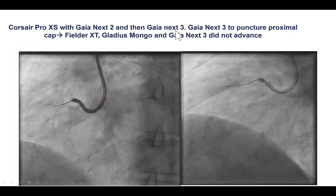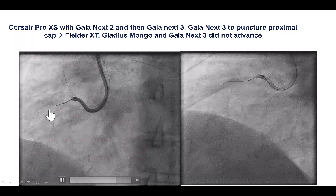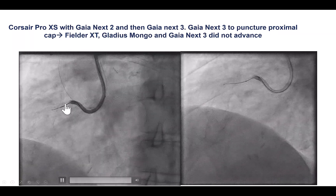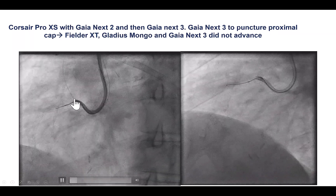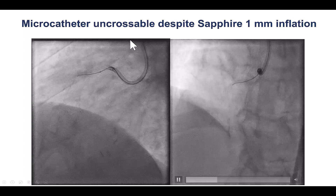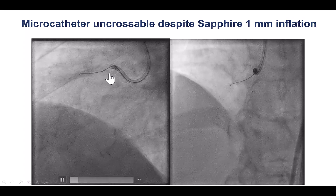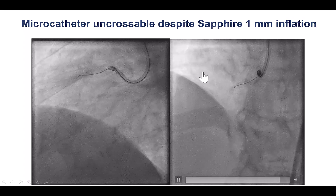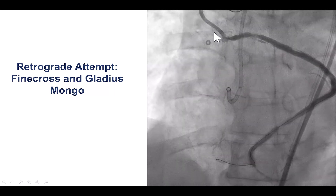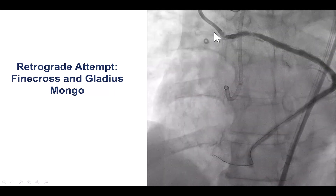We tried multiple guide wires and had difficulty penetrating the proximal cap. This was anticipated to some extent based on the severe calcification seen on the coronary CTA. We were able to get a SUBFIRE 1.0 slightly in the lesion and perform balloon inflation, but could not deliver a microcatheter. After multiple attempts, we decided to try retrograde crossing.